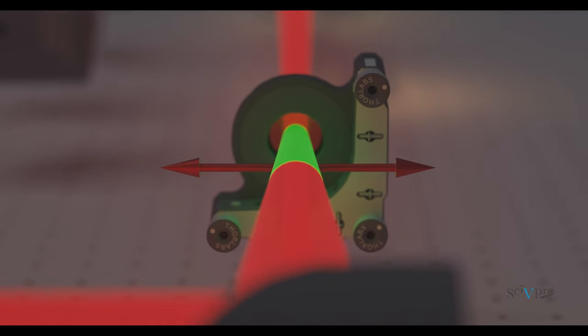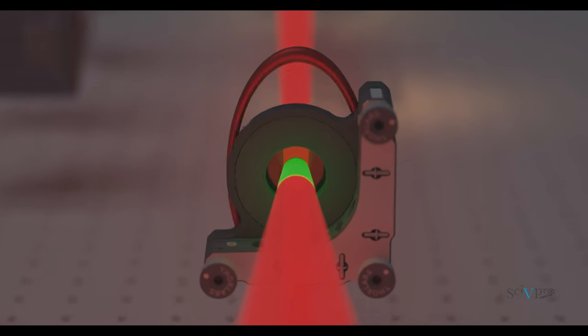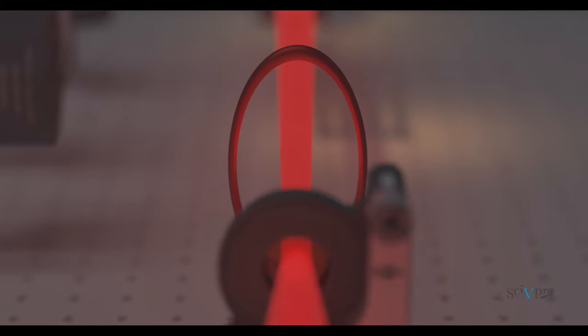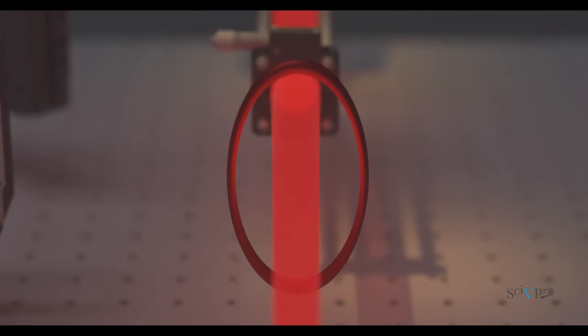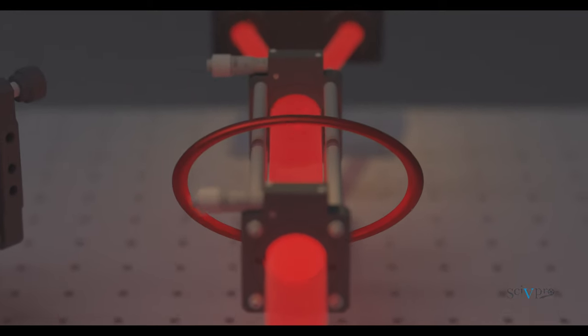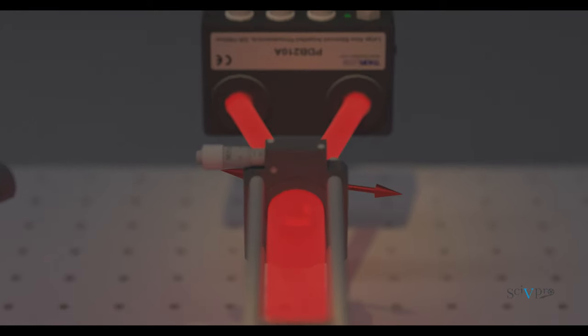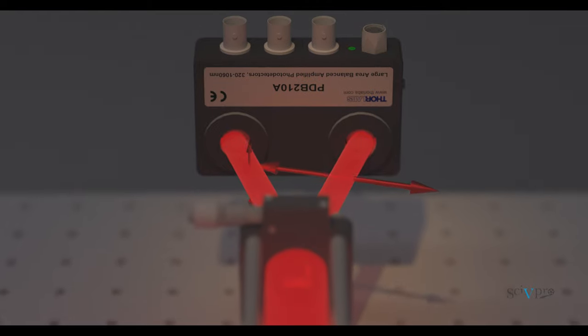Once this calibration has been carried out, the terahertz pulse can be measured. The terahertz-induced birefringence modifies the electric field of the probe from circular to elliptical. This deviation, which is proportional to the terahertz field, is detected by the balanced photodiode.